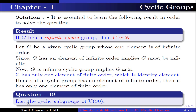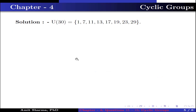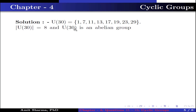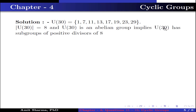Question number 19: List the cyclic subgroups of U30. U30 contains the elements 1, 7, 11, 13, 17, 19, 23, and 29. The order of U30 is 8, and U30 is an abelian group. This implies U30 has subgroups of orders equal to the positive divisors of 8, that is 1, 2, 4, and 8.